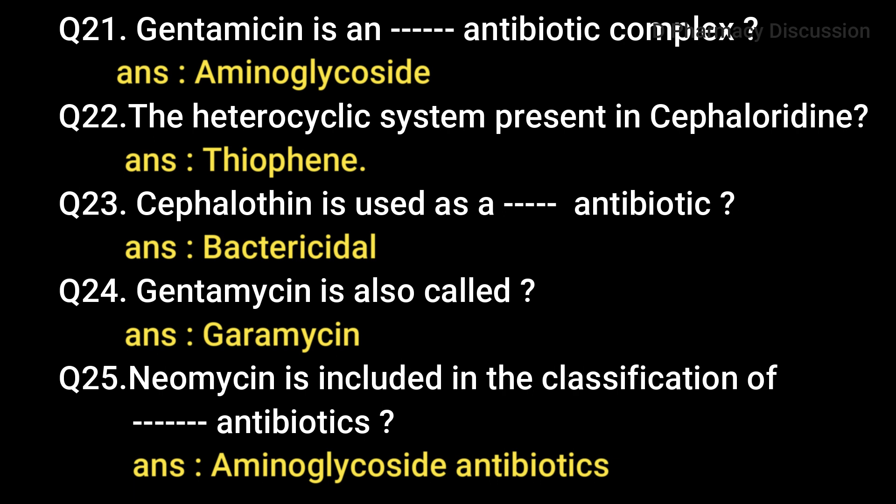Question 23: Cephalothin is used as a bactericidal antibiotic. Question 24: Gentamicin is also called Garamycin. Question 25: Neomycin is included in the classification of aminoglycoside antibiotics. Actually, neomycin is a mixture of three substances — neomycin A, B and C — isolated from Streptomyces fradiae by countercurrent distribution.